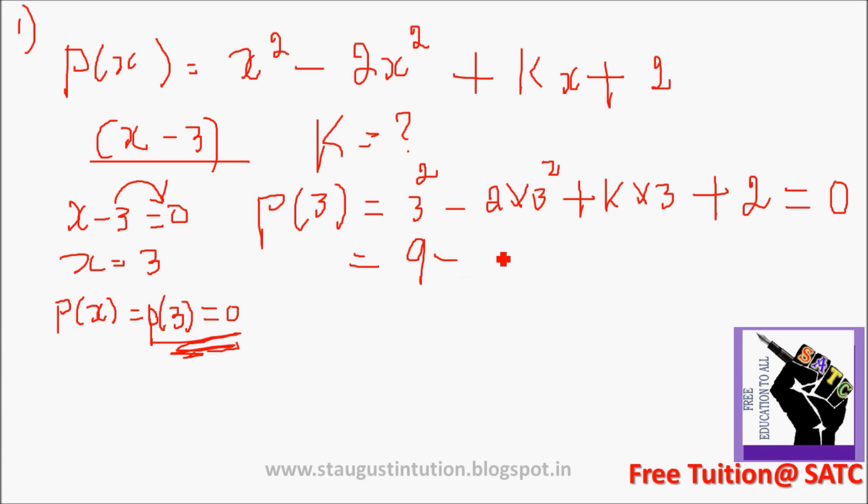3 cubed minus 2 into 9 plus k into 3, so 3k plus 2 equal to 0. 3 cubed is 27 minus 2 into 9 is 18, plus 3k plus 2 equal to 0.